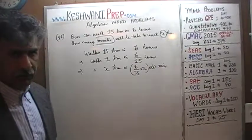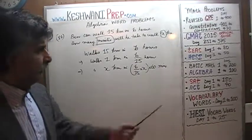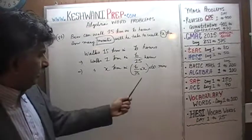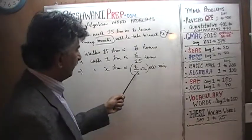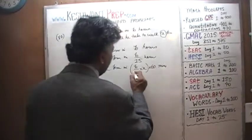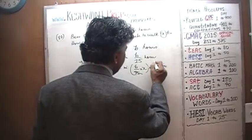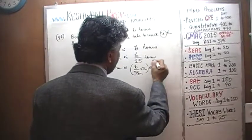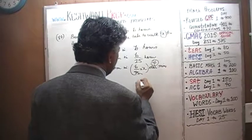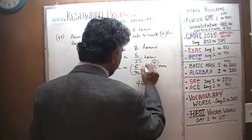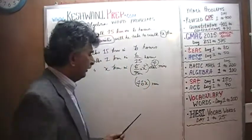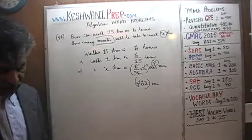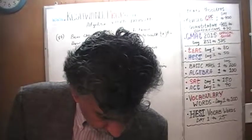Now we have the answer in minutes. All we have to do is simplify. The answer choices on the exam will be in simplified form. We see 15 on the bottom and 60 on the top — dividing top and bottom by 15, 60 becomes 4. We end up with 4 times B times X minutes. Our final answer is: it will take 4BX minutes.